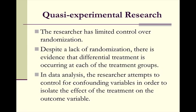In quasi-experimental research, the researcher has limited control over randomization. Despite the lack of randomization, there is evidence that differential treatment is occurring at each of the treatment groups. In data analysis, the researcher attempts to control for confounding variables — basically, confounding variables are variables that might influence what you're studying, but you're not studying those particular variables — in order to isolate the effect of treatment on the outcome variable.